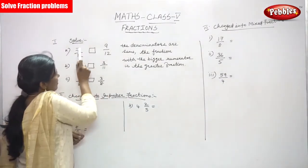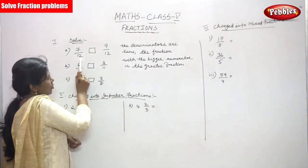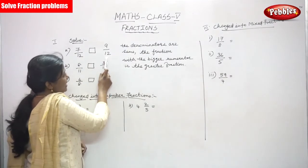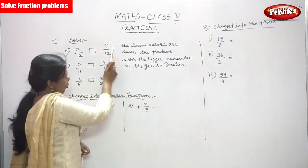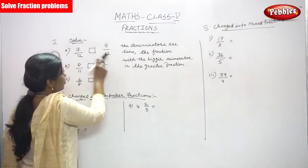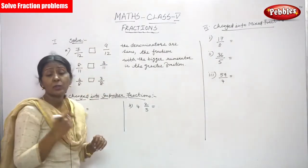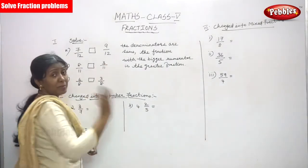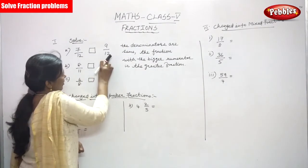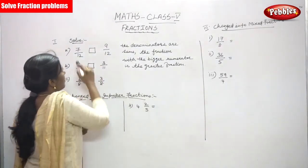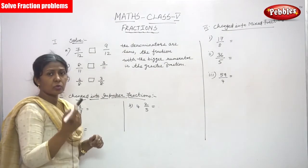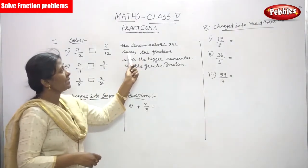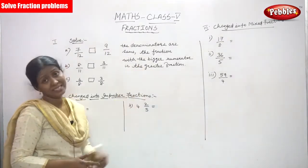In 7 by 12, the denominator is 12 and the numerator is 7. In 9 by 12, the denominator is 12 and the numerator is 9. So in both fractions the denominator is the same — it is similar. The denominators are similar in both fractions, but look at the numerator: the numerator is different. So the fraction with the bigger numerator is the greater fraction.